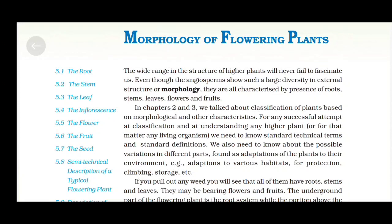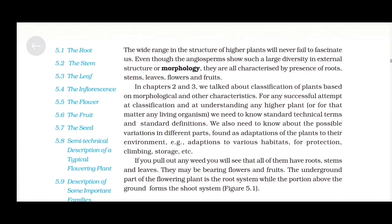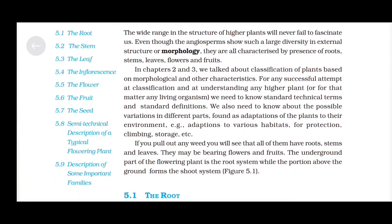We also need to know about the possible variation in different parts found as adaptations of the plants to their environment, for example, adaptation to various habitats for protection, climbing, storage, etc. If you pull out any weed, you will see that all of them have roots, stems and leaves. They may be bearing flowers and fruits. The underground part of the flowering plant is the root system while the portion above the ground forms the shoot system.